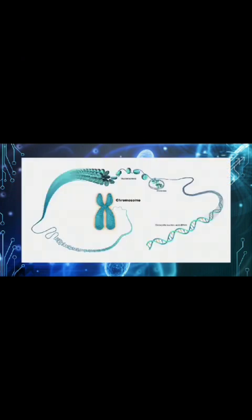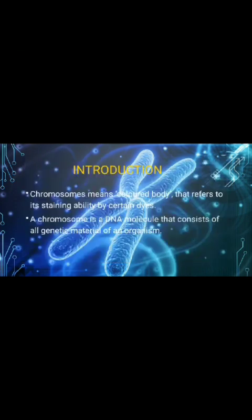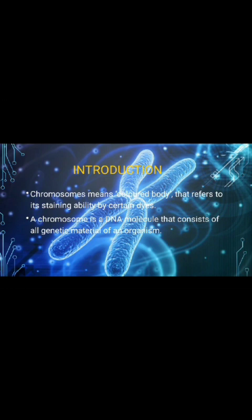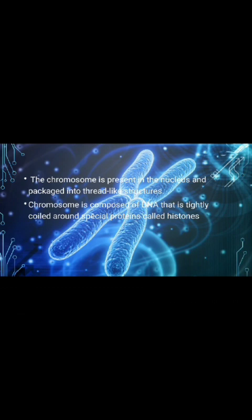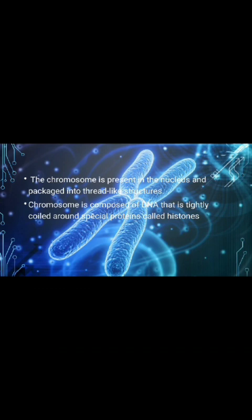This is the diagrammatic representation of chromosomes, which consists of nucleosomes, histones, and deoxyribonucleic acid. Chromosome means colored body, referring to the staining ability by certain dyes. A chromosome is a DNA molecule that consists of part or all of the genetic material of an organism. The chromosome is present in the nucleus of each cell and is packaged into a thread-like structure. Each chromosome is composed of DNA that is tightly coiled around a special protein called histones.